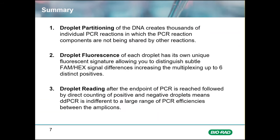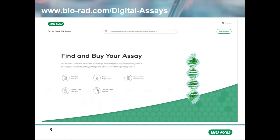In summary, easy and robust multiplexing is a compelling reason to use droplet digital PCR. Thousands of partitions per sample prevent competition for PCR resources and allow for many fluorescent signatures in a single sample. Reading droplets at endpoint ensures that every assay on each sample will be quantified. For best results building your triplex multiplex assay, we recommend visiting the Biorad digital assays website, where you can design and purchase assays specifically designed for ddPCR.